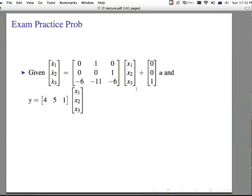You can give it a try with this 3x3 system here. X1 dot, X2 dot, X3 dot is equal to A here, times X1, X2, X3 plus 001U, and Y is equal to 451 times X1, X2, X3. Notice it's a single input, single output system.